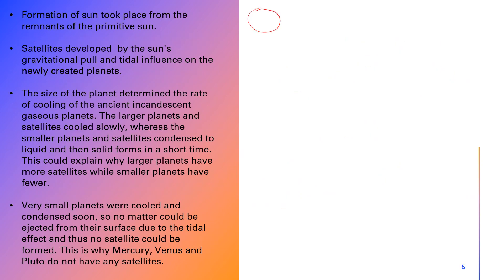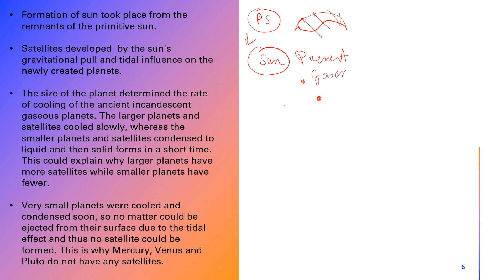After the primitive sun lost the filament, the remaining portion became our present-day sun. The planets formed from the filament were initially gaseous. These gaseous planets exerted gravitational action on each other, and the sun also exerted gravitational force on the planets.